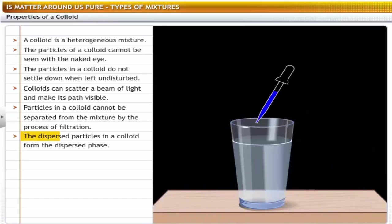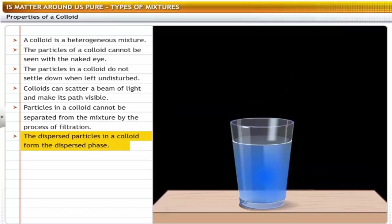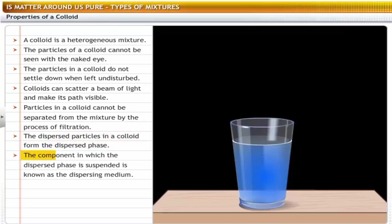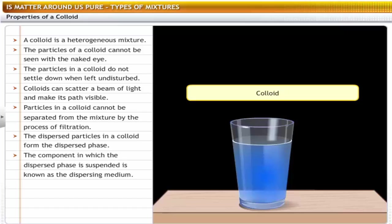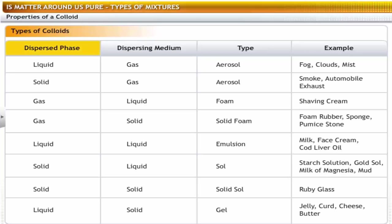A colloidal solution has two components: the dispersed phase and the dispersing medium. The solute-like component or the dispersed particles in a colloid form the dispersed phase. The component in which the dispersed phase is suspended is known as the dispersing medium. You can classify a colloid according to the state of the dispersing medium and the dispersed phase, and there can be many types of colloids.